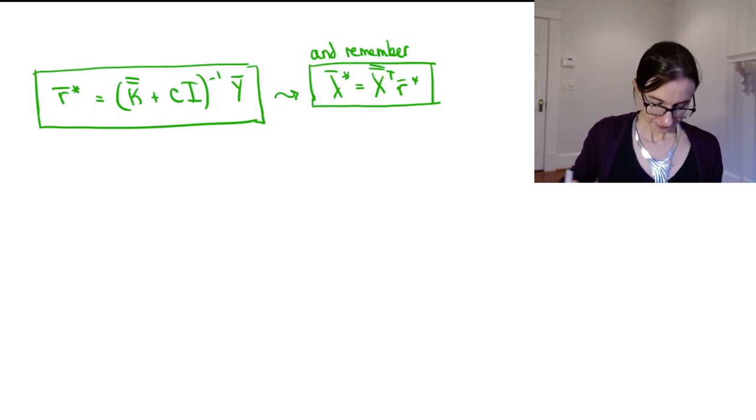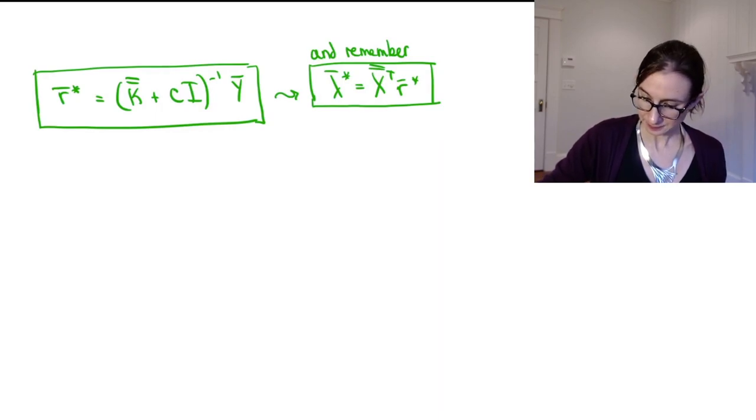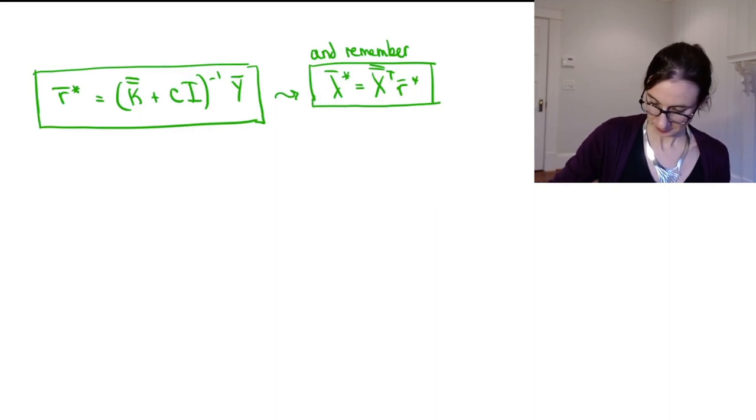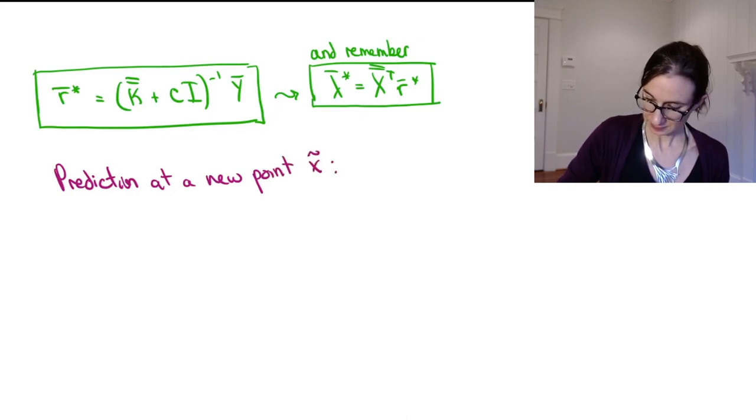Okay. All right. So let's write down that we're going to make a prediction at a new point x tilde. Okay. So we need to compute f of x tilde.